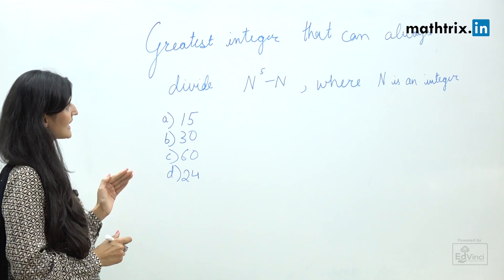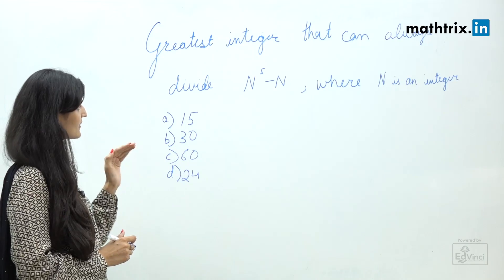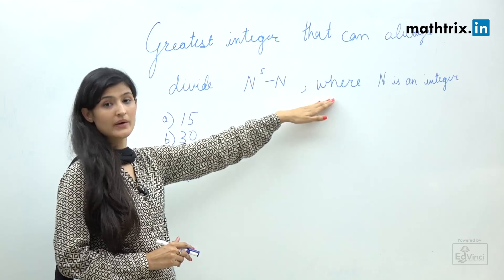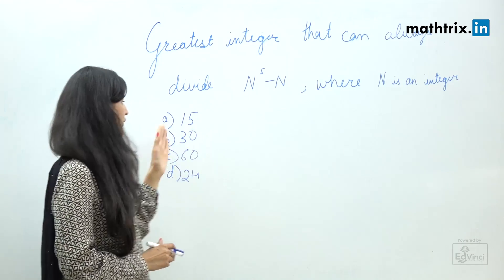If you see the question, it's greatest integer that can always divide n raised to the power 5 minus n where n is an integer. You have options.